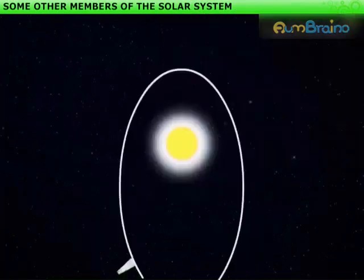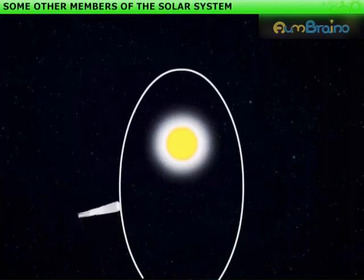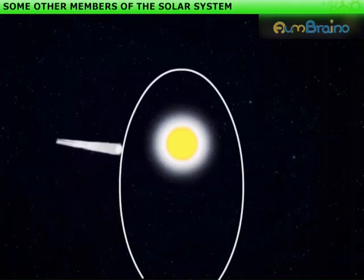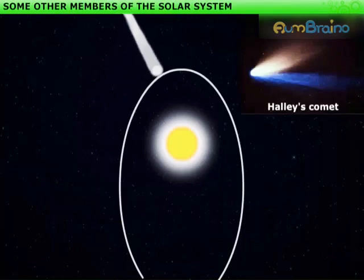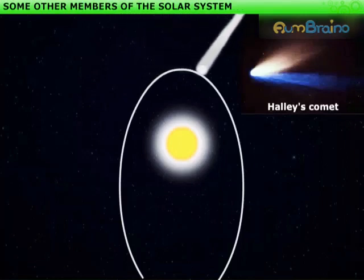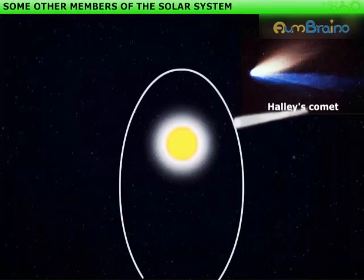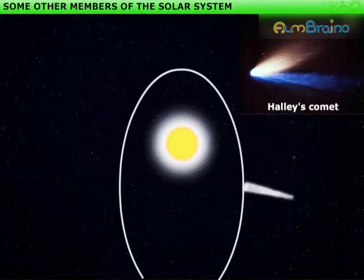Comets revolve around the sun in highly elliptical orbits. Their period of revolution around the sun is usually very long. For example, Halley's Comet appears after every 76 years. A comet appears generally as a bright head with a long tail. The tail of a comet is always directed away from the sun.